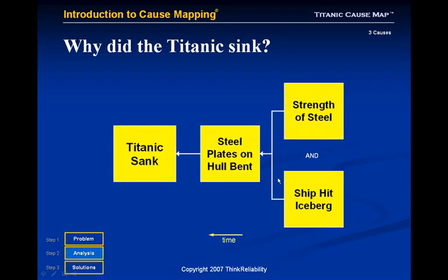This cause and effect relationship shows that the steel plates bending on the hull are caused by the force of the ship hitting the iceberg and the strength of the steel. Even if the ship hit the iceberg, if the steel is stronger, it reduces the bending on the plates. There are two causes of the steel plates bending on the hull.